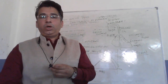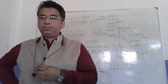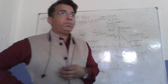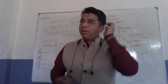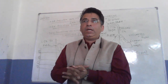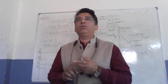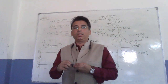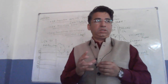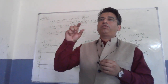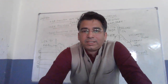Photochemical smog is basically formed by sunlight. As per the definition, it is a mixture of pollutants which includes particles, nitrogen oxides, ozone, aldehydes, peroxyacyl nitrates, and unreactive hydrocarbons. Photochemical smog is an eye irritant.